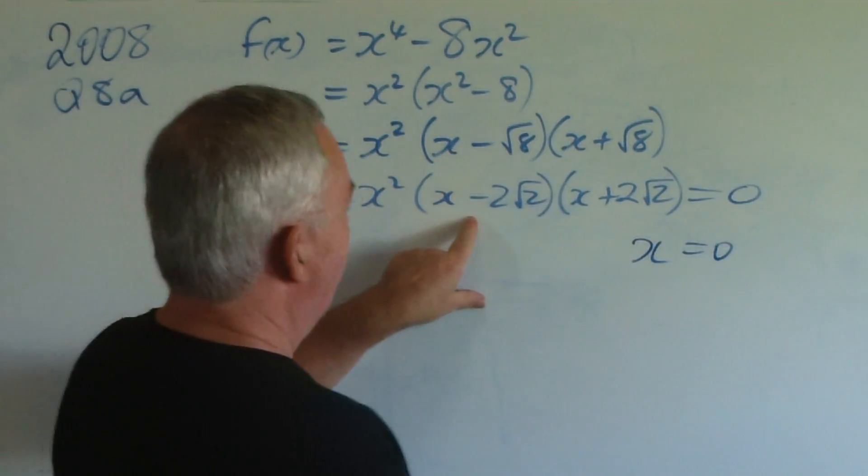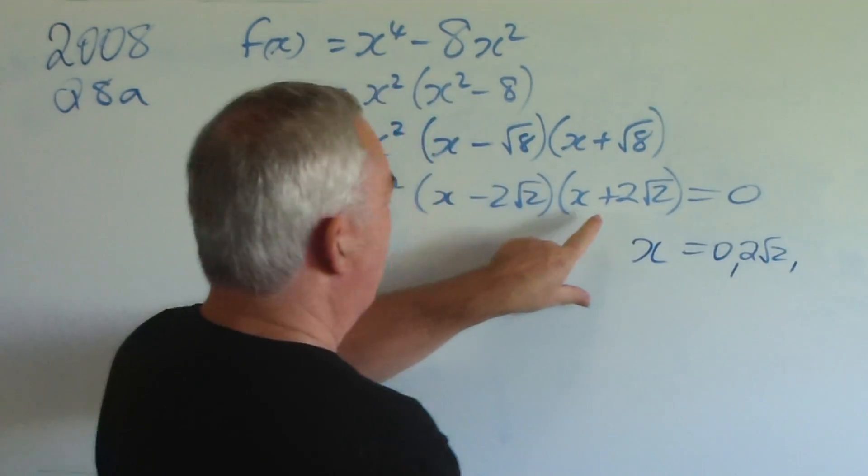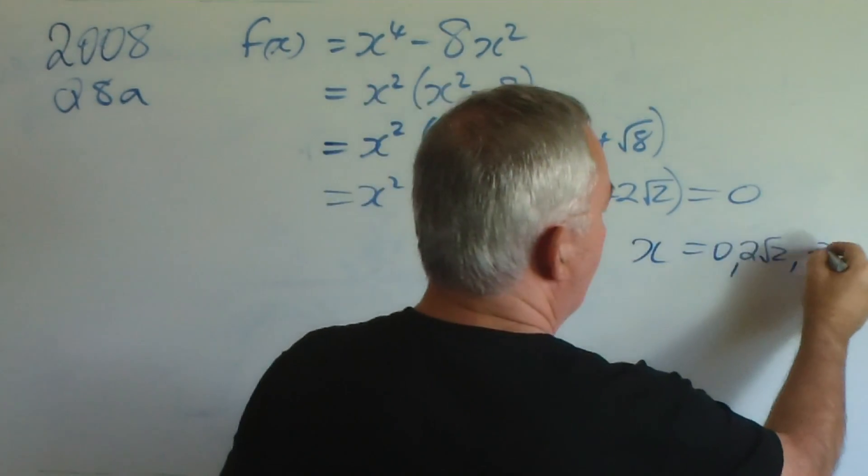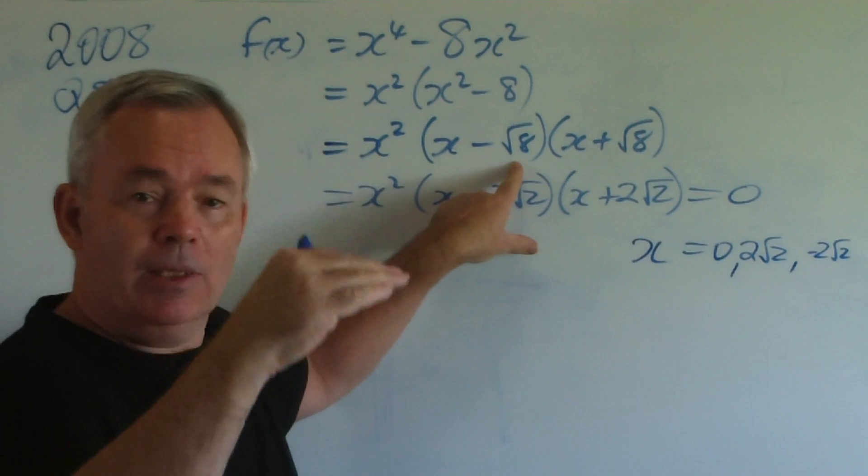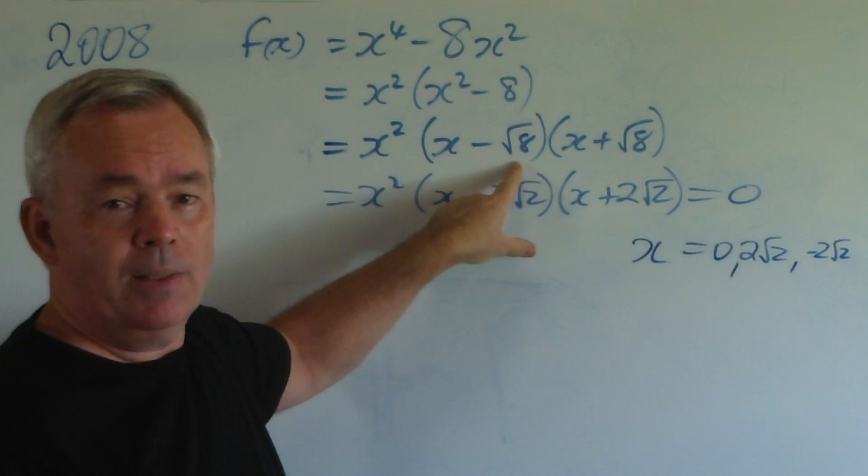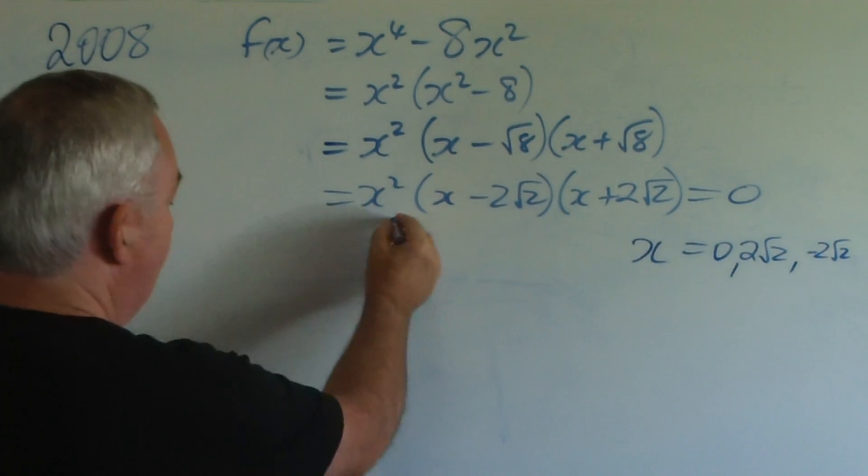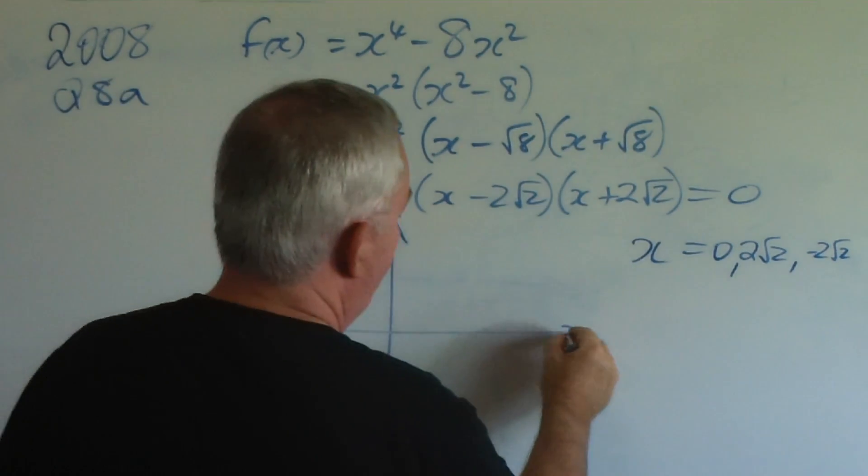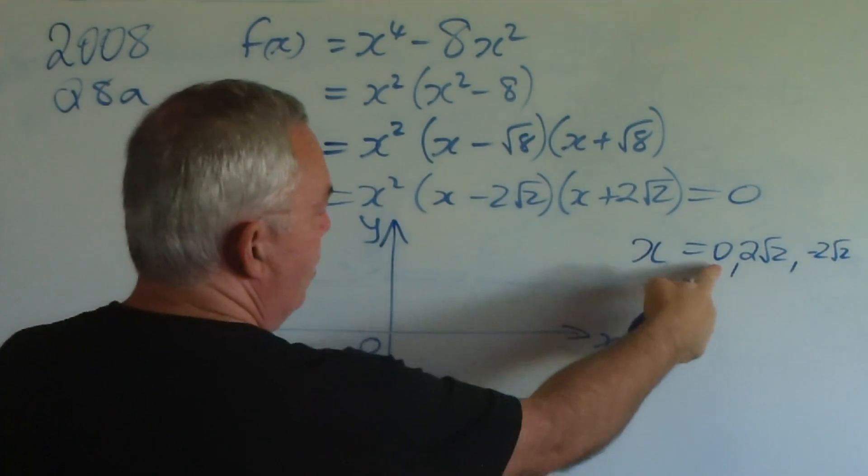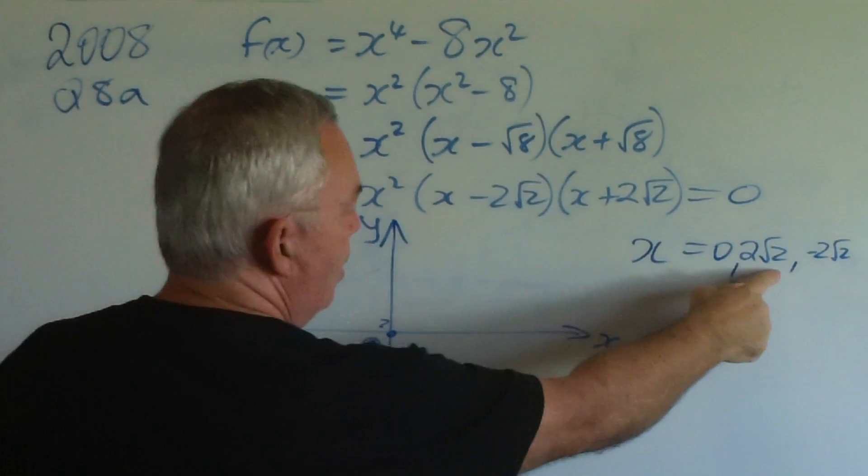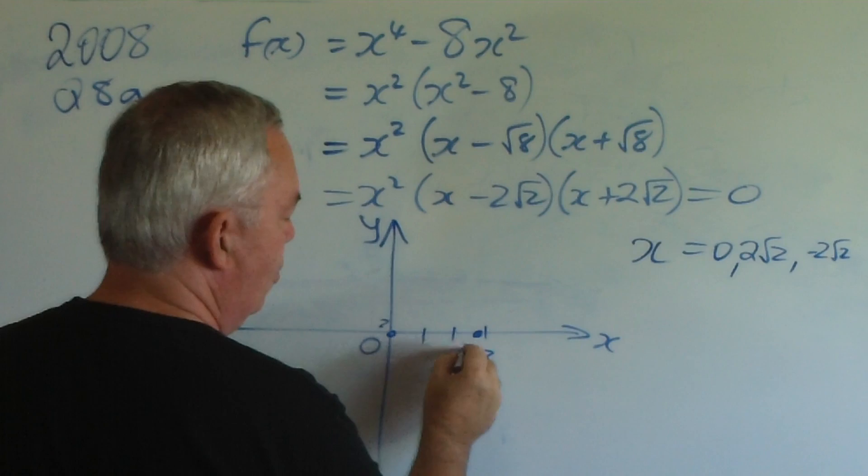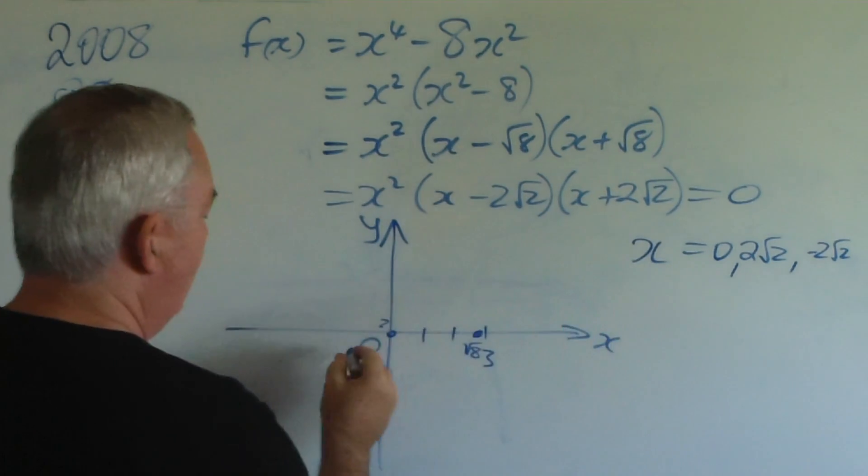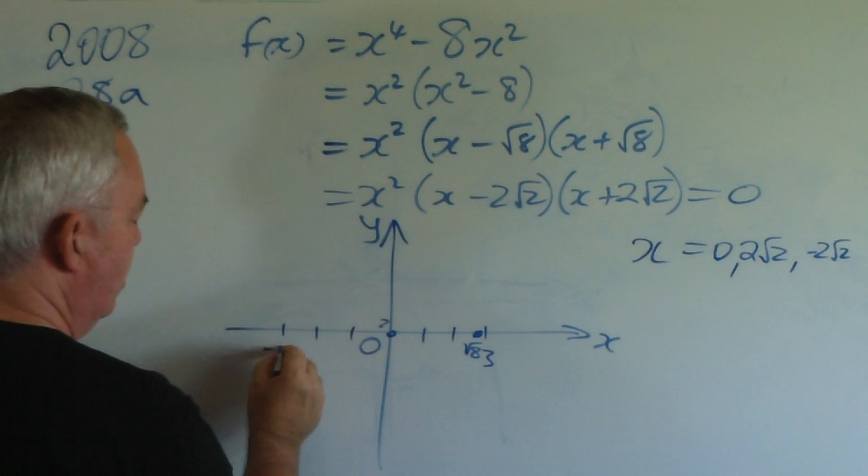Notice, we actually have a double root and two singles. So, x equals zero is our double root. And, we have a root at two root two and another one at minus two root two. Now, where are they located? Well, square root of eight is just a little bit less than the square root of nine. So, it must have a value just slightly under three. So, we have a double root at zero. We have one root just under three. So, there's three. I'll just put a little marker there and call that root eight. And, we have one the same distance in the negative direction. Minus root eight.